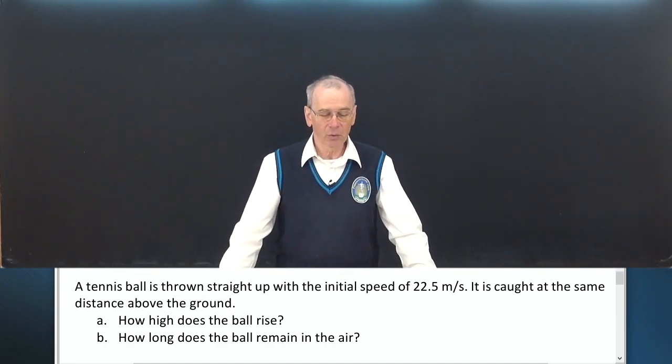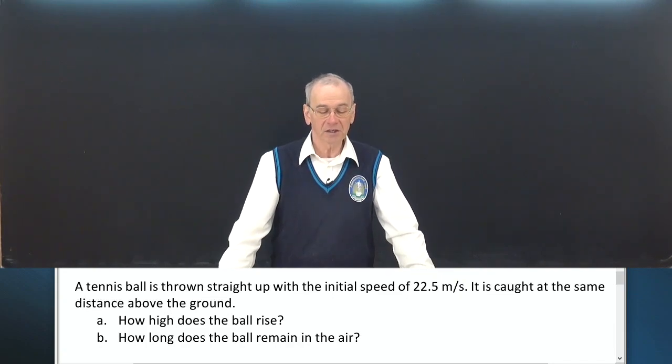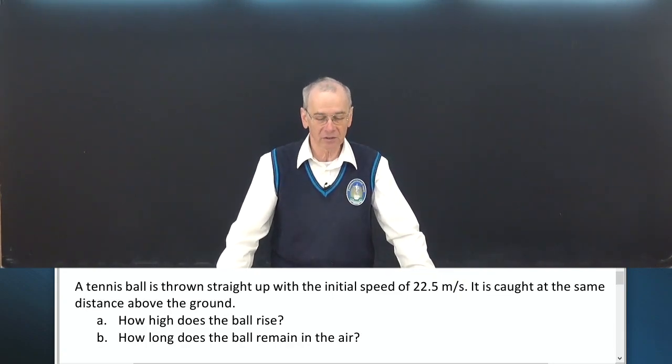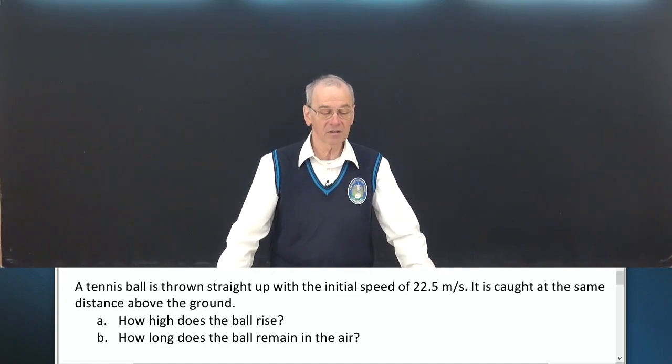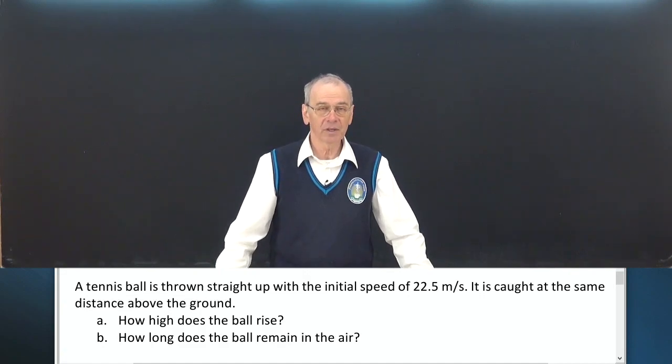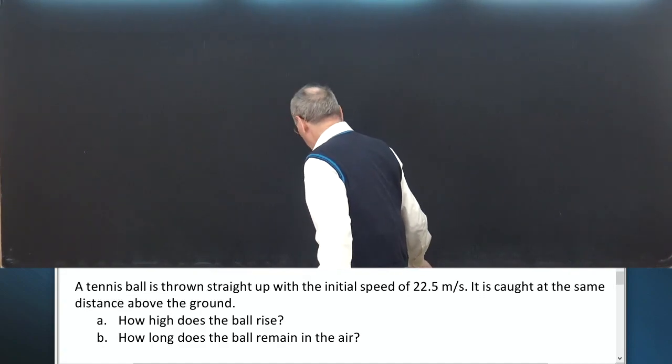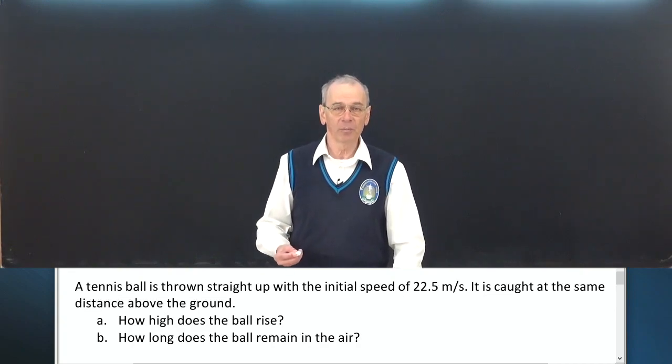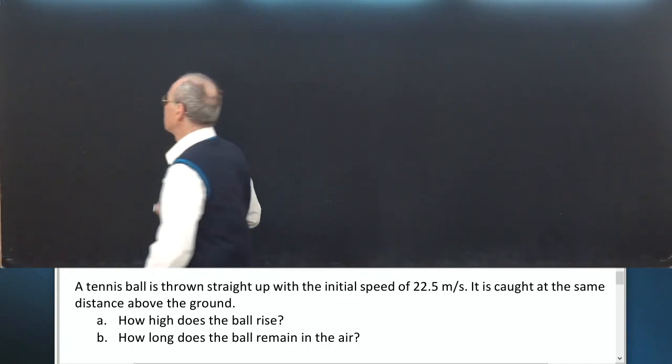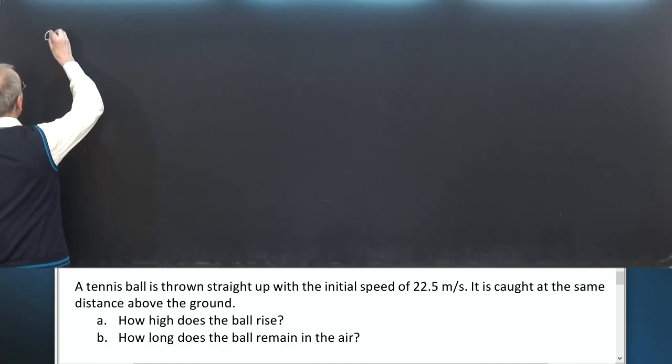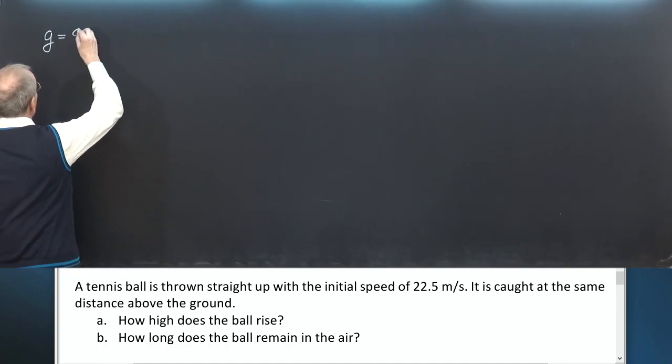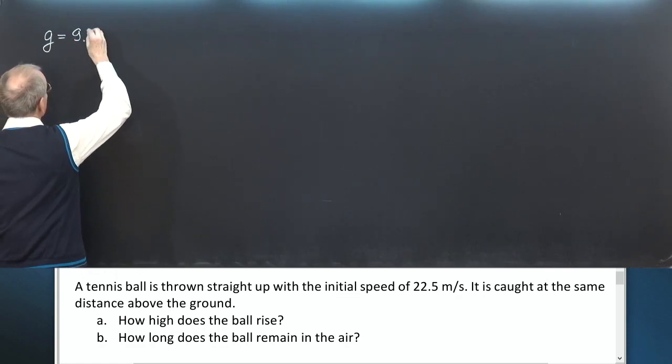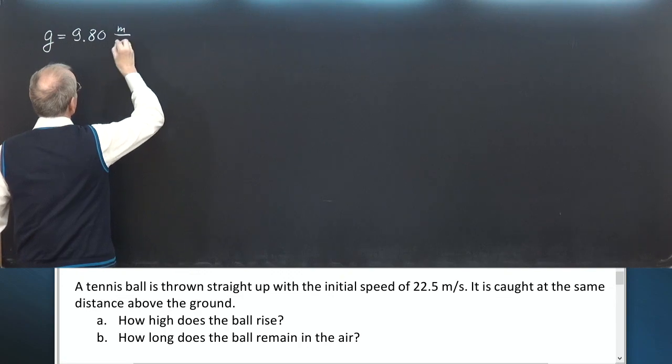A tennis ball is thrown straight up with the initial speed of 22.5 meters per second. It is caught at the same distance above the ground. How high does the ball rise and how long does the ball remain in the air? This problem is about free fall. Free fall is uniformly accelerated motion and the acceleration of free fall equals 9.80 meters per second squared.